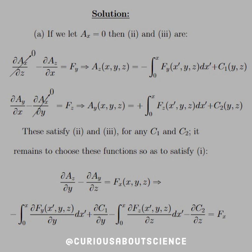For part A, if we let Ax equal zero, then two and three are written as their respective curl components. Since Ax equals zero, the Ax derivatives go to zero because derivative of zero is zero. So when we're solving this differential equation, we integrate both sides, and we see that Az as a function of x,y,z equals this negative integral.